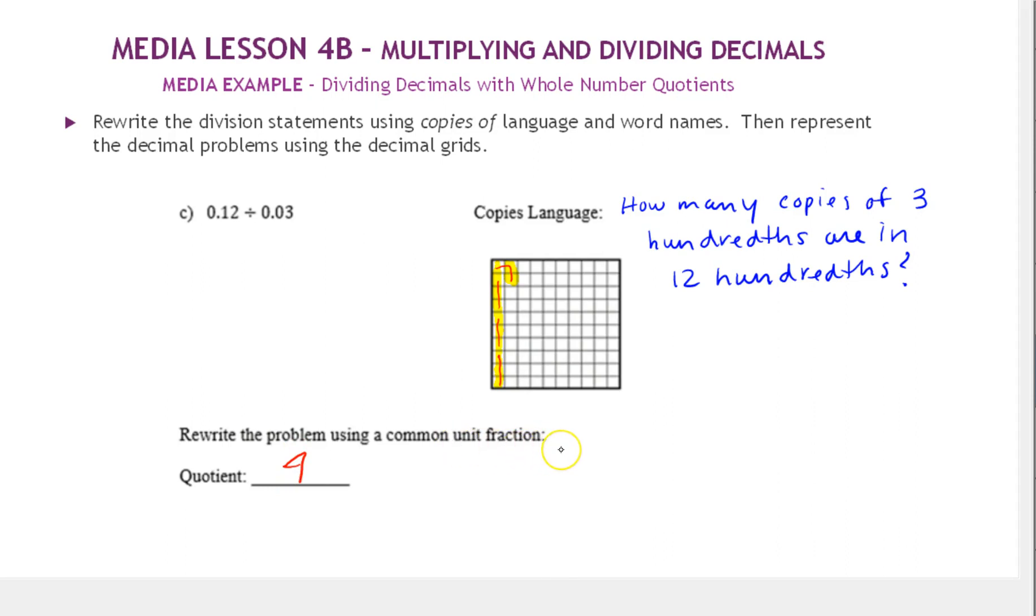And using a common unit fraction, well this was written in a common unit fraction, but we'll write it as division. 12 hundredths divided by 3 hundredths, and our result was 4.